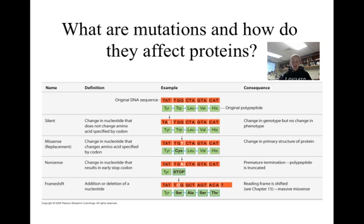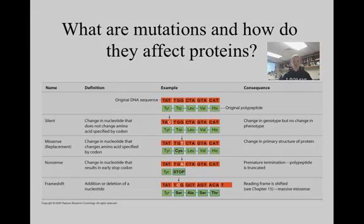Frameshift mutations occur when a nucleotide is added or deleted from a DNA sequence, shifting the entire reading frame. These are very detrimental types of mutations, as every codon downstream from the mutation will be different than it should have been.